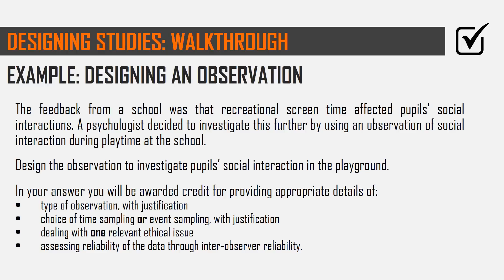The bullet points we've been given are: type of observation with justification, time sampling or event sampling — so how we're going to actually record the data with justification — dealing with one relevant ethical issue, and how we're going to assess reliability, specifically inter-observer reliability. This would be a 12 marker, by the way.